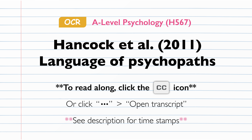Professor Hancock of Cornell University, New York, devised a study, the first of its kind, into the language of psychopaths, using sophisticated text analysis software, to understand whether there are any unique qualities in the language that psychopaths use. Prior to this, there had been little research conducted on the speech used by psychopaths. Two studies conducted in 2003 and 2006 by Professor Hare at the University of British Columbia had suggested that psychopaths have specific combinations of social, cognitive, and emotional characteristics that are different from the general population.